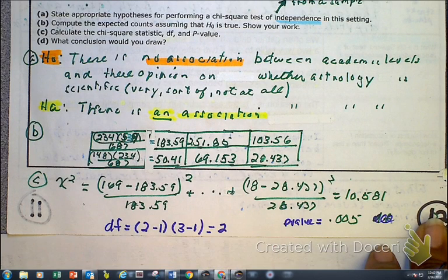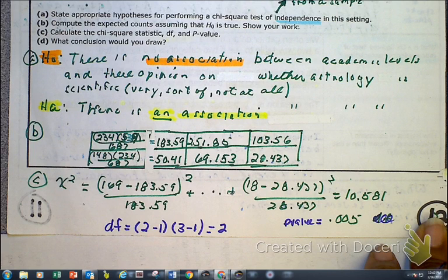Then, of course, that means that we are going to reject the H0. So, yes, we're rejecting the H0, which means we're going to support the HA. So there's convincing evidence that there is an association between academic levels, or I should say education levels, and your opinion about astronomy.